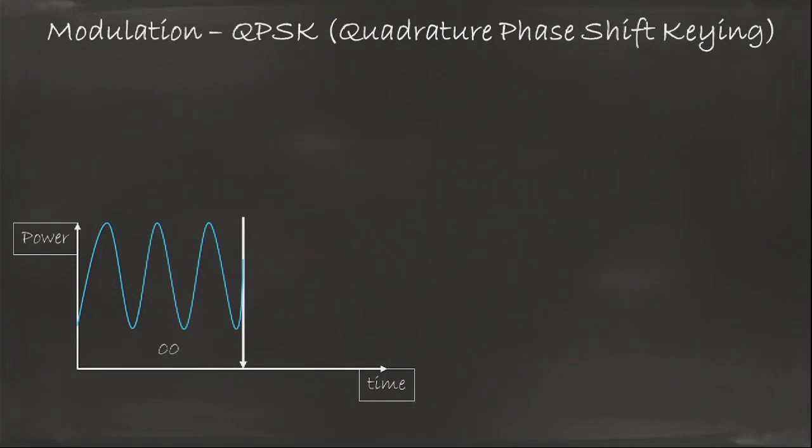For example I start with zero zero. And here I'm going to make a slightly different change. I can say if I want to represent zero zero next I just do what I was doing with BPSK, nothing changes. My wave continues just the way it was. That's zero zero.